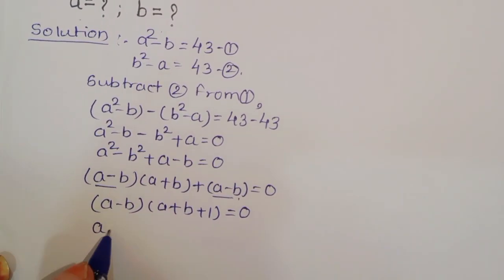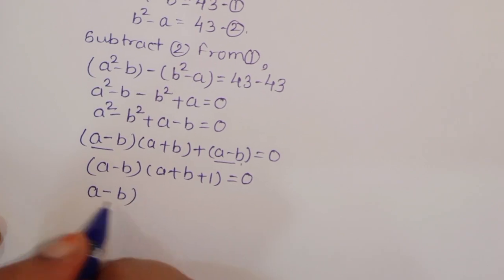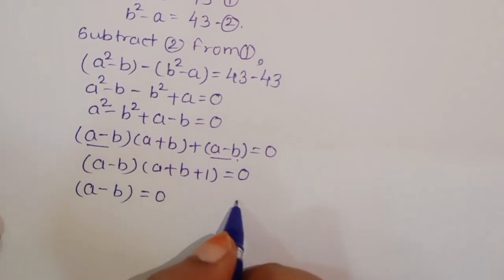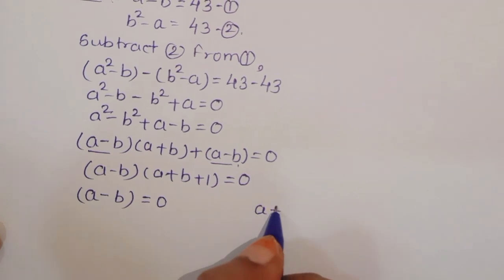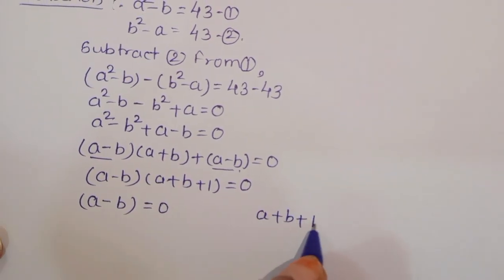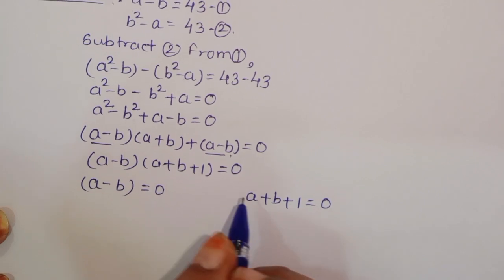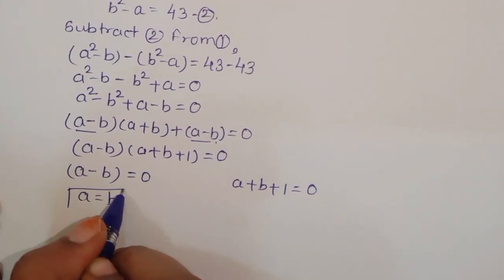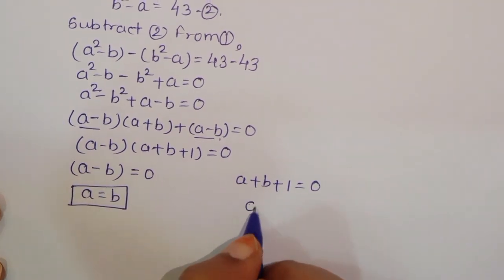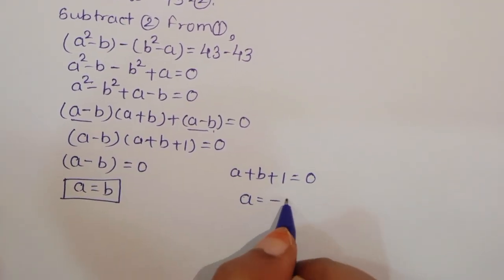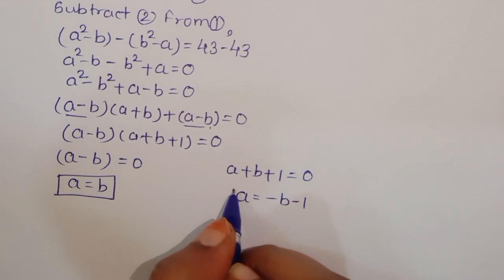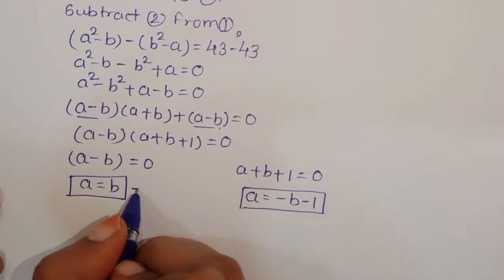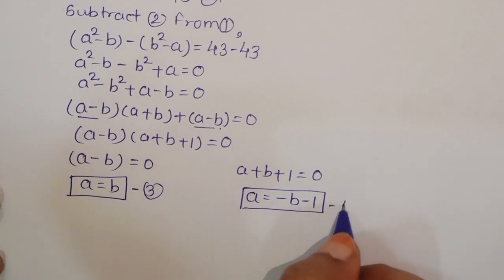So we have two solutions here. Either a minus b equals 0, giving a equals b (equation 3), or a plus b plus 1 equals 0, giving a equals minus b minus 1 (equation 4).